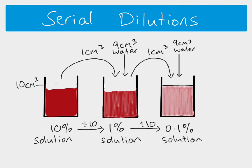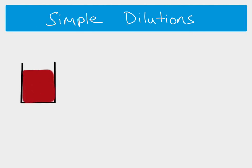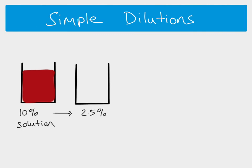Now what about simple dilutions? These are possibly a little bit trickier. Here is our original 10% solution, and this time we want to make a 2.5% solution from it. We're going to say we start with 10 cm³ and we want to make 10 cm³ of our new 2.5% solution.